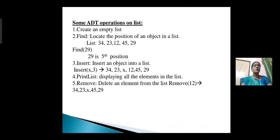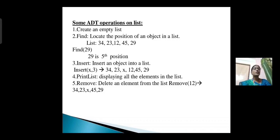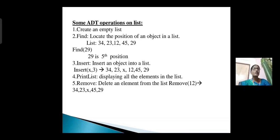Some ADT operations on a list are: Create an empty list. Find: locate the position of an object in a list. For example, given list 34, 23, 12, 45, 29 — find the number 29; its position is 5th. Insertion: insert an object into a list — for example, insert X in the third position. Print list: display all the elements in the list. Remove: delete an element from the list — for example, remove 12. The final list is 34, 23, X, 45, 29.